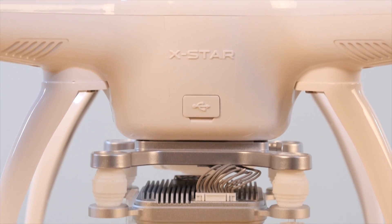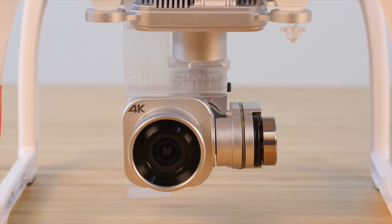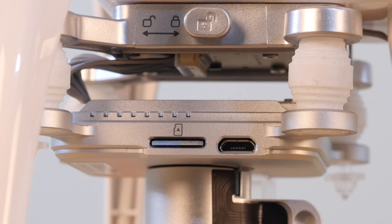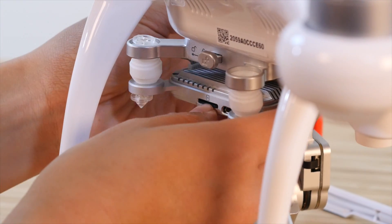Now, hanging from the bottom of the X-Star is the XI-5S camera and gimbal module. On the side, you can see the micro SD card slot. If there's a card in there, pressing in on it until you hear the click will eject the card.